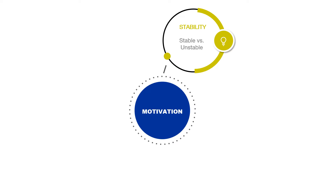The next one is stability. We have stable versus unstable. A student may attribute his poor performance at school to the genes he inherited from his parents, saying that he is not bright and he got it from his parents.